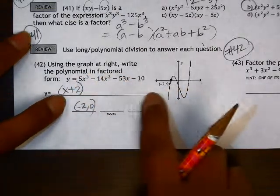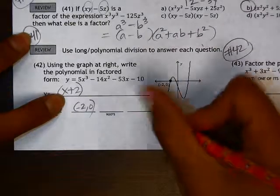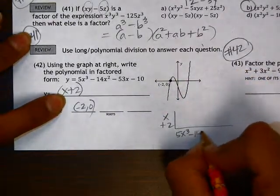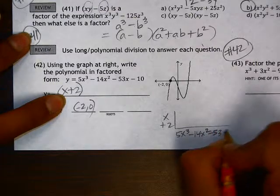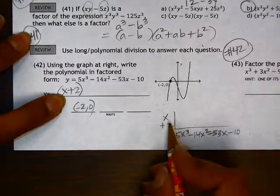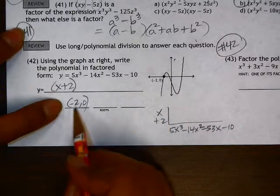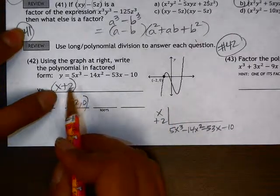I should be able to figure out what the remaining factors are. So I'm going to use division here to divide 5x cubed minus 14x squared minus 53x minus 10 by x plus 2. Be careful not to use x minus 2 because the root is negative 2, which means the factor is x plus 2.